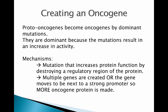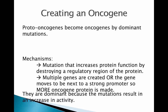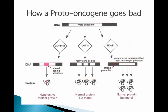Another way to get too much protein function is through gene duplication events, producing multiple copies of the gene. A gene can also be moved from one chromosomal location to another and placed next to a strong promoter — since promoters regulate mRNA synthesis, this causes the production of far more mRNA than normal, turning the proto-oncogene into an oncogene through a gain-of-function mechanism.